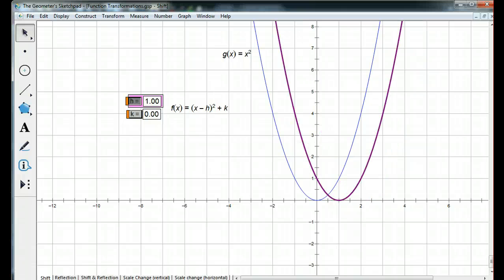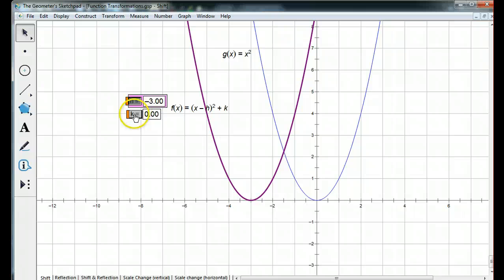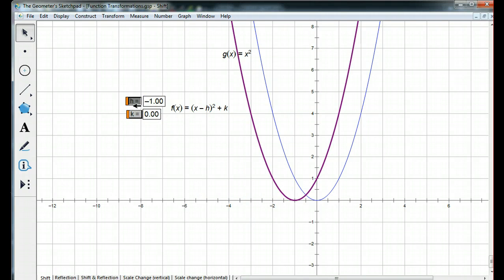So, now we're coming back to h equals 0, and then as soon as h becomes negative. Now I've got x minus a negative 3, which is really x plus 3. So, if I'm adding a number to x, it's going to move to the left.